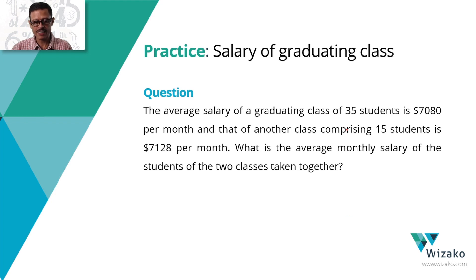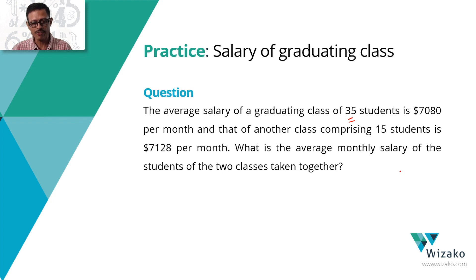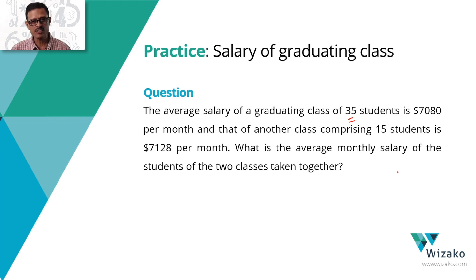The average salary of a graduating class of 35 students is $7080, and that of another class comprising 15 students is $7128 per month. What we need to find out is the average monthly salary of students of the two classes taken together. We need to find the weighted average — we can either use the formula or go with the standard framework.